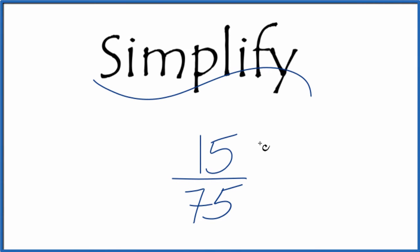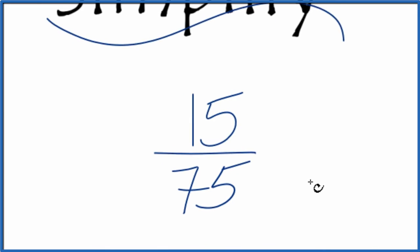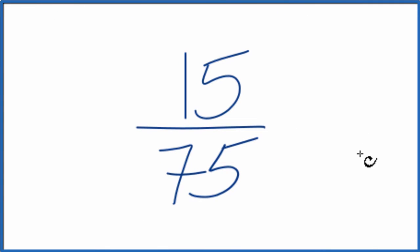Let's simplify the fraction 15 over 75. Here's how we'll do it. We're trying to find another fraction that's equivalent, with the same value as 15 over 75, but in lowest terms.